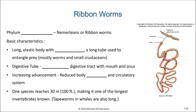Our next phyla of bilaterally symmetrical worms are the ribbon worms from phylum Nemertia. What causes the nemertians to be distinct is that they have a long proboscis that they can use to surround and ensnare their prey items. They are all carnivores and they feed on other worms. Their basic characteristics include a long elastic body with a proboscis.